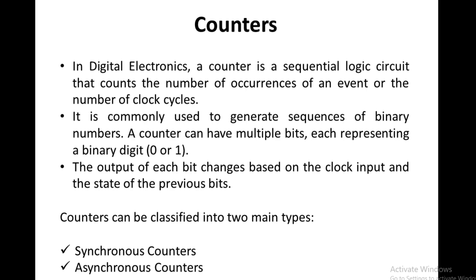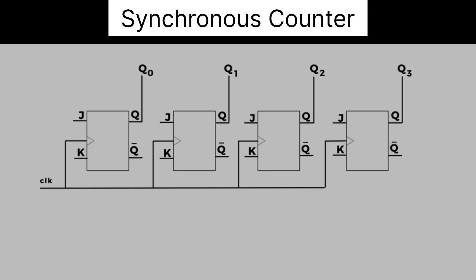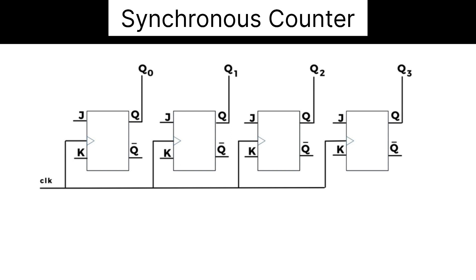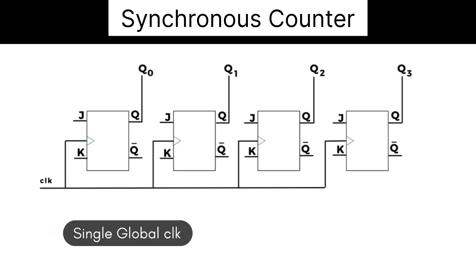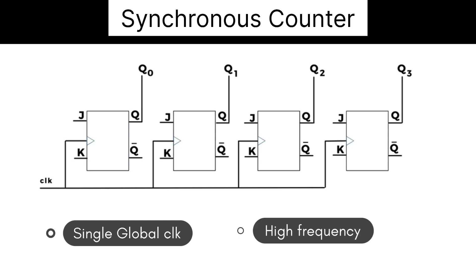A synchronous counter is also known as a parallel counter, and its operation is fast compared to asynchronous counters. The synchronous counter has a single global clock that drives each flip-flop, allowing outputs to change in parallel, and it can operate at higher frequencies. In this type of counter, all flip-flops' clock inputs use the same source and produce output at the same time.